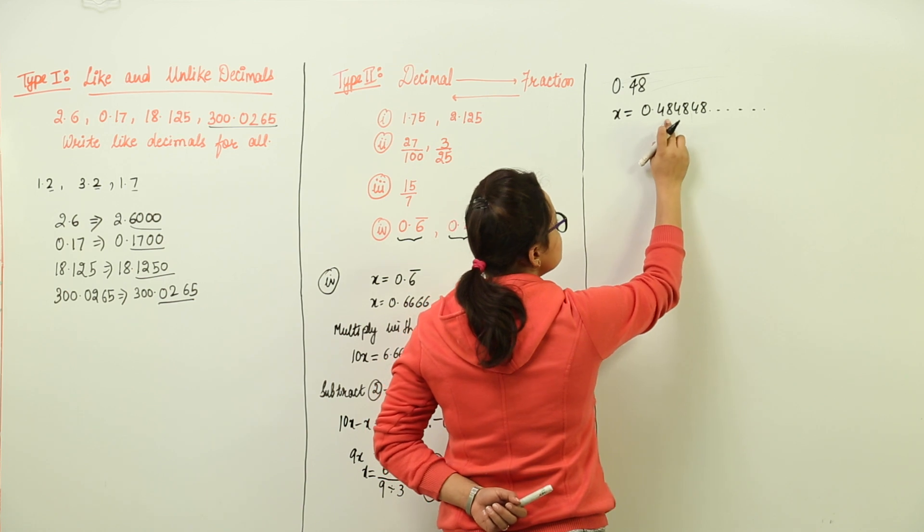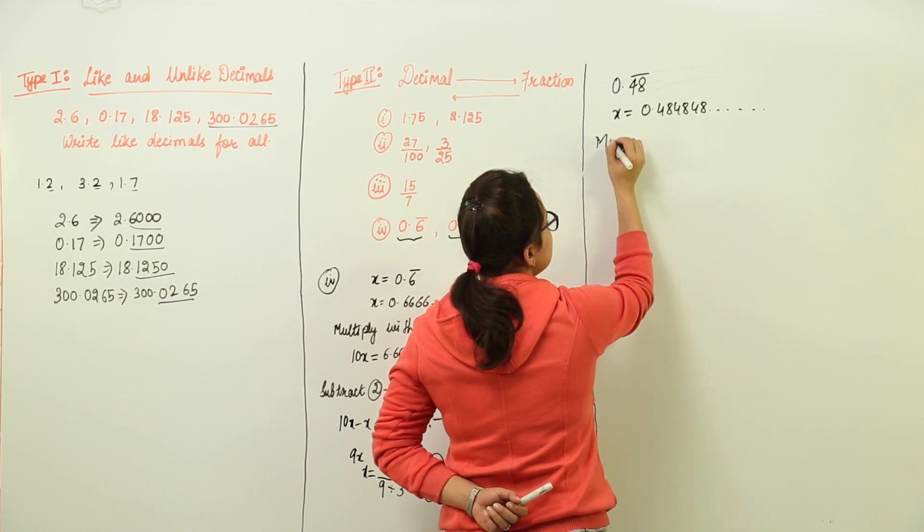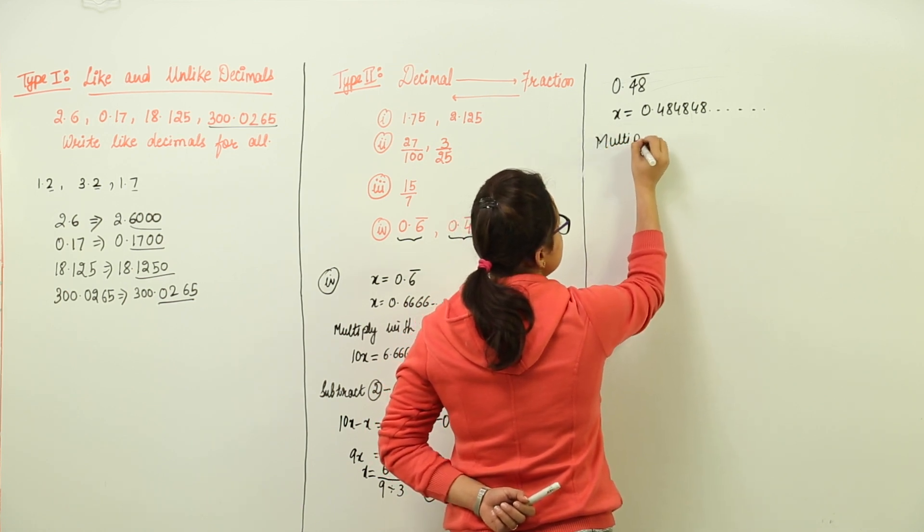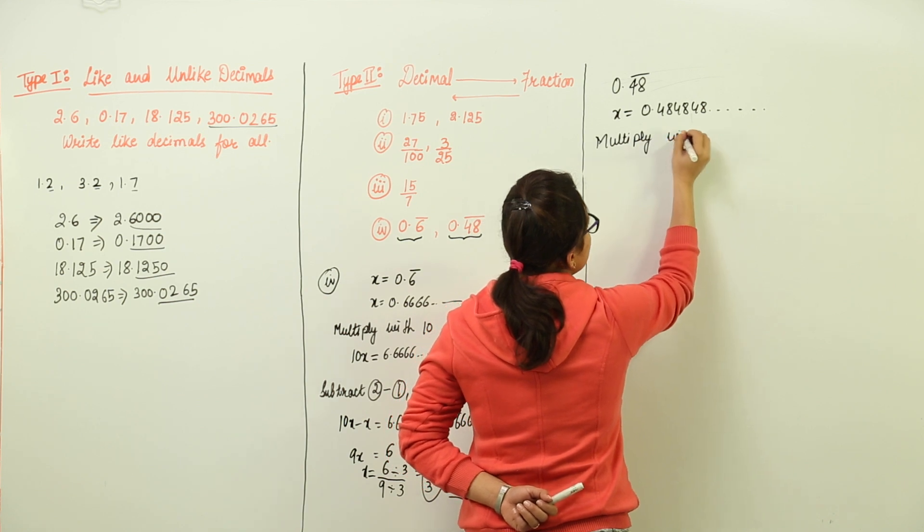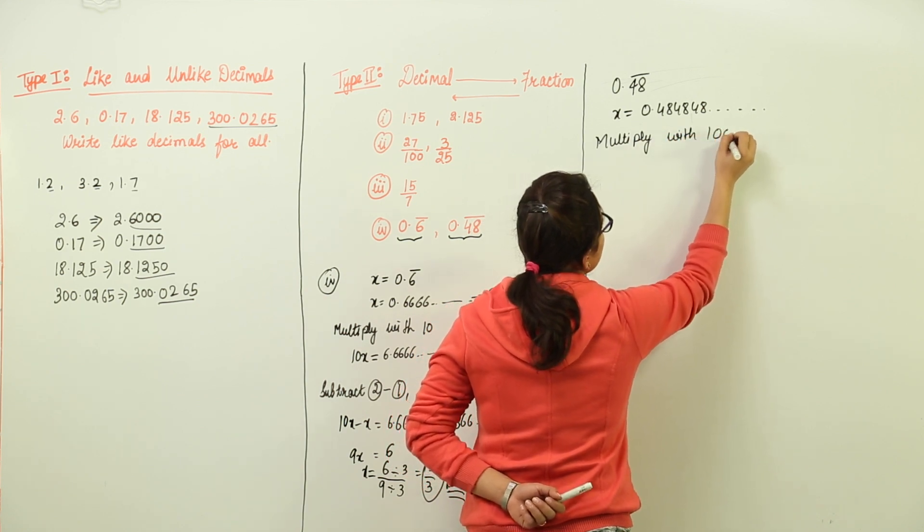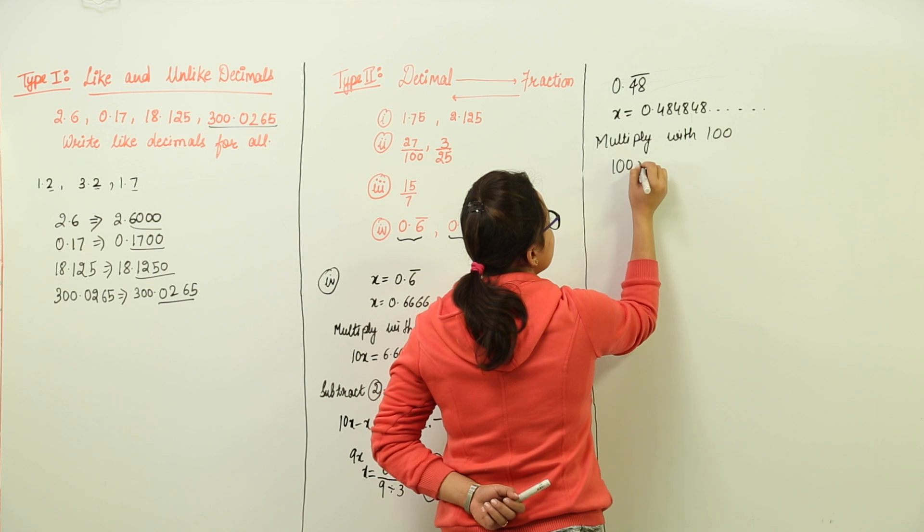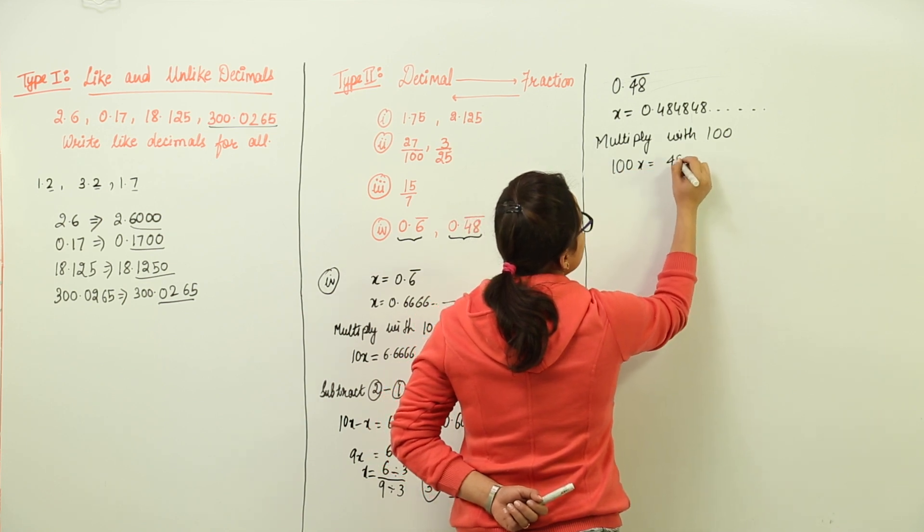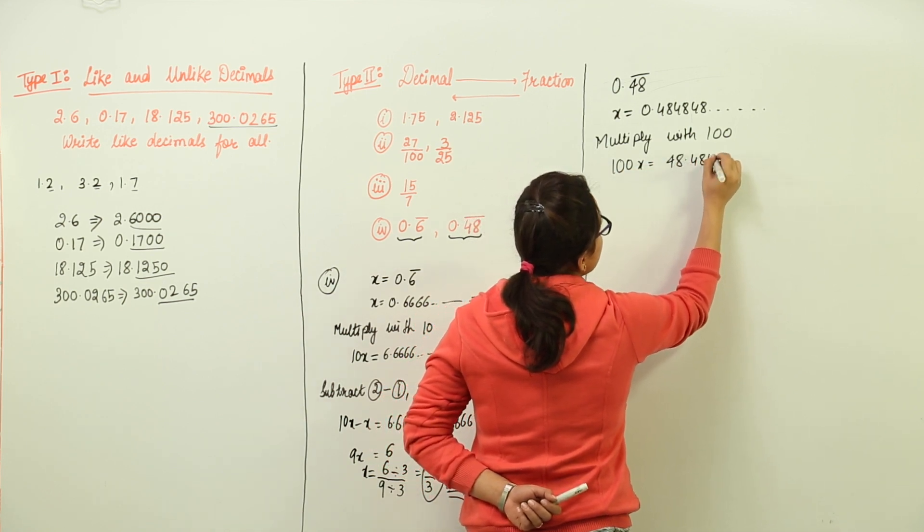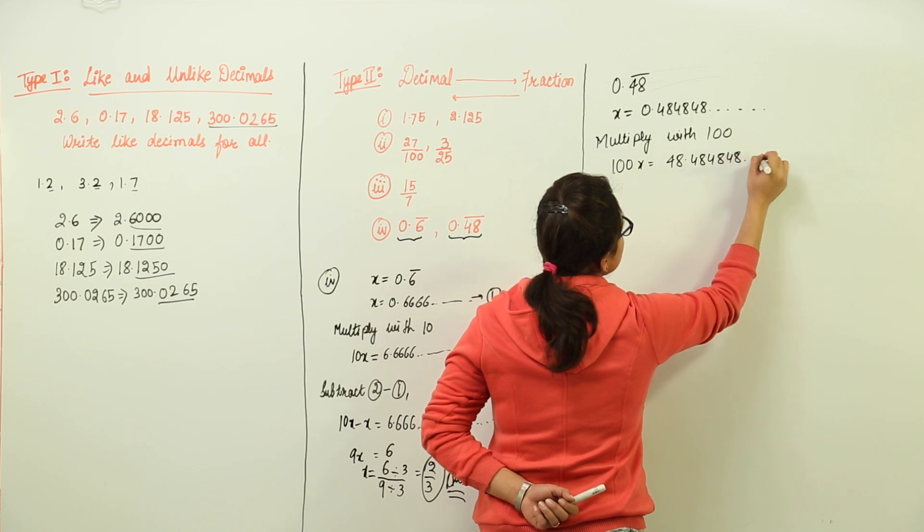Now because 2 digits are repeating, we will multiply both the sides with 100. So multiply with 100. And we get 100x equal to 48.484848 and so on.